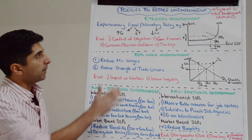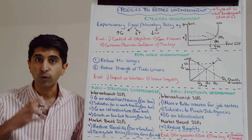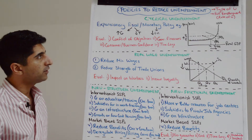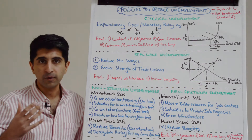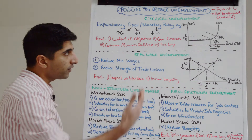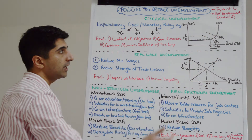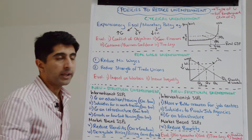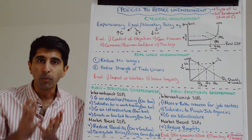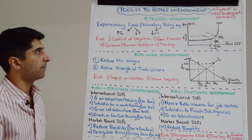Expansionary fiscal policy could be increasing government spending or reducing taxation like income tax or corporation tax. Expansionary monetary policy could be a reduction in interest rates. And if these policies work then aggregate demand would shift to the right as we see here. With that we get economic growth, but because labor is a derived demand, more employment is created and that can bring down cyclical unemployment.